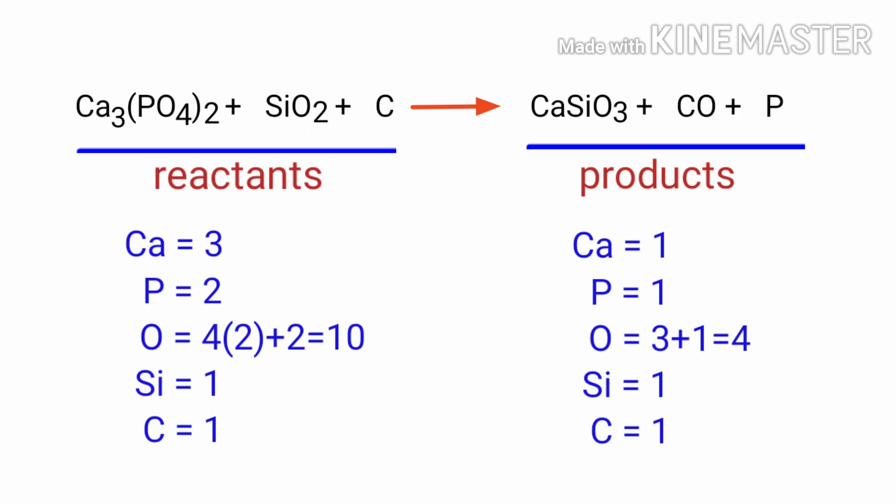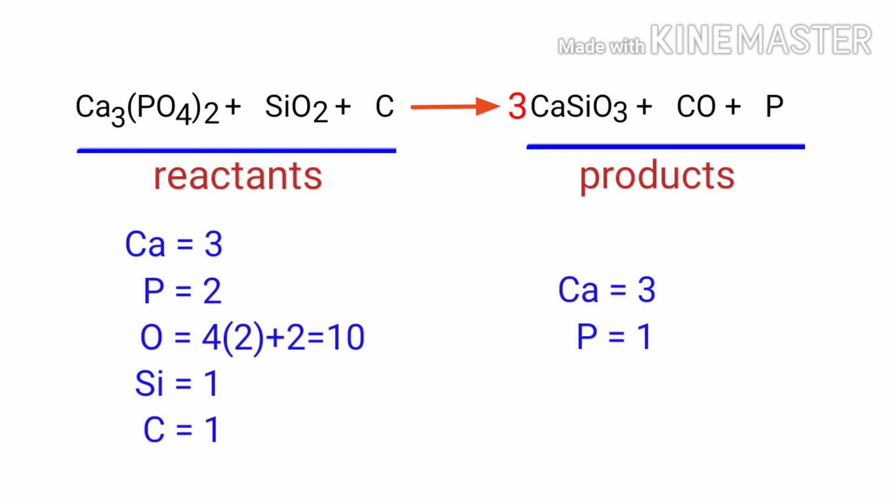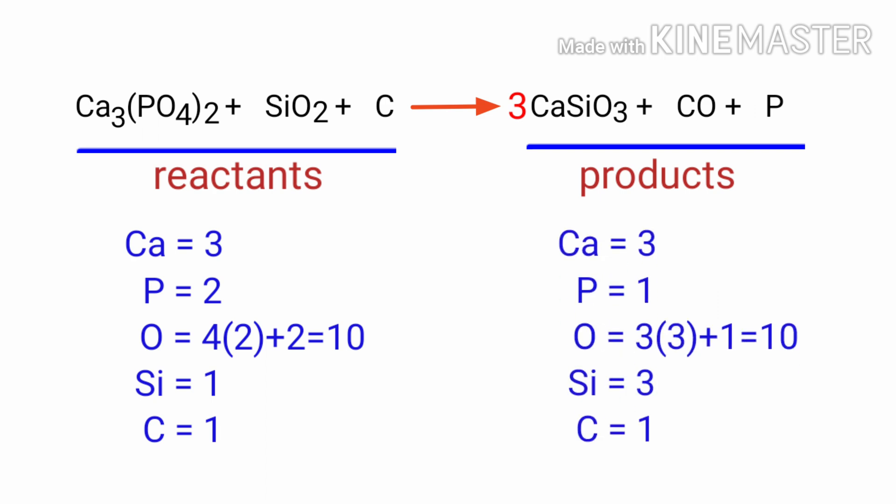In this equation, we need to balance the calcium atoms first. To do this, we need to put a coefficient of 3 in front of CaSiO3. The calcium atoms are now balanced.